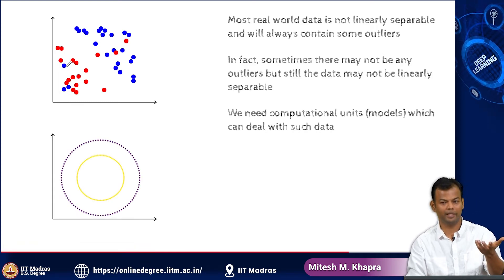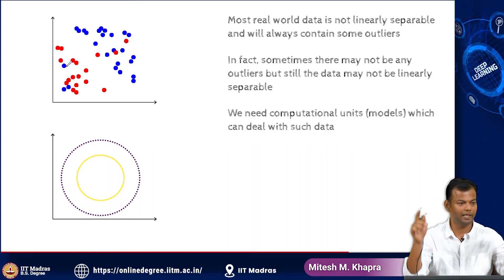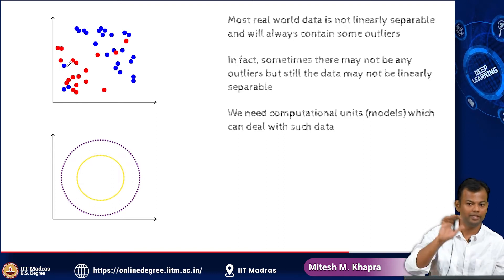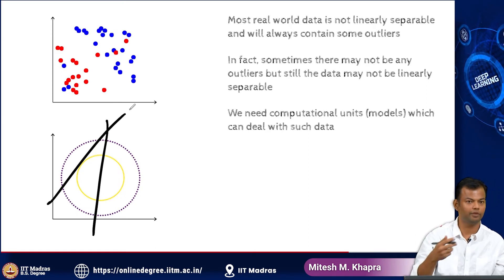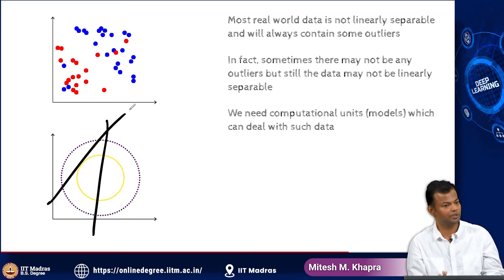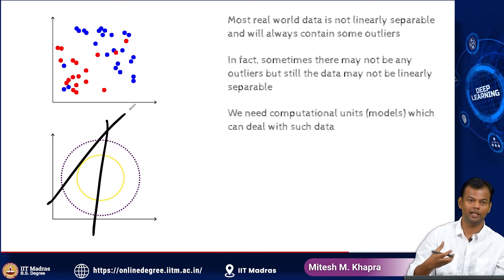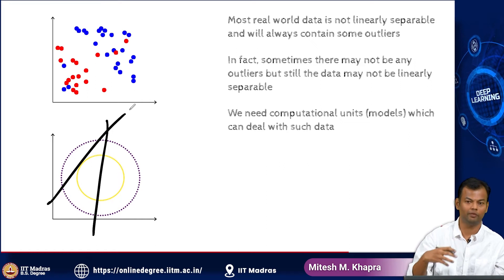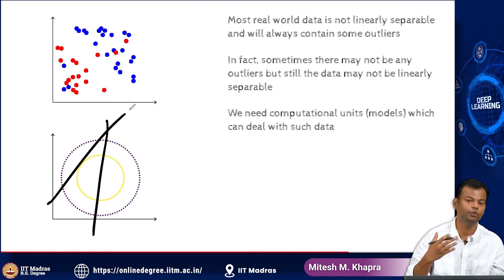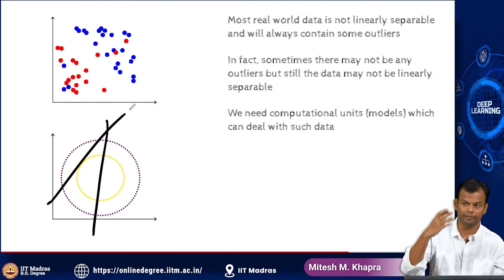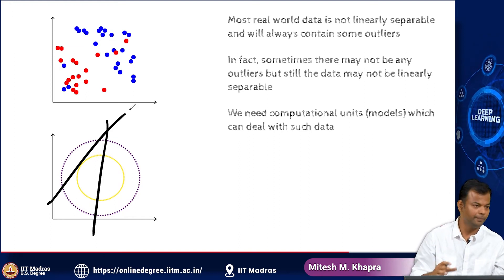It need not just be outliers — there could be other things as well. Here is a very good example with no outlier at all: people in the inner circle behave a certain way and people in the outer circle behave a certain way. I cannot draw a linear decision boundary to separate the yellow points from the purple points. This is very common in many real-world situations. The constraint that I can only deal with linearly separable data is not acceptable in the long run, so we will have to move beyond the perceptron model.